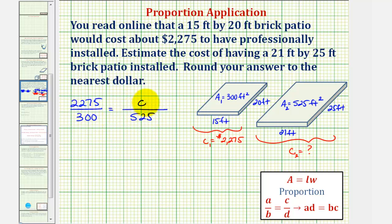Now that we have our proportion, we can cross multiply and solve for C to make our estimate. Where if we have a proportion of A over B equals C over D, then A times D must equal B times C.